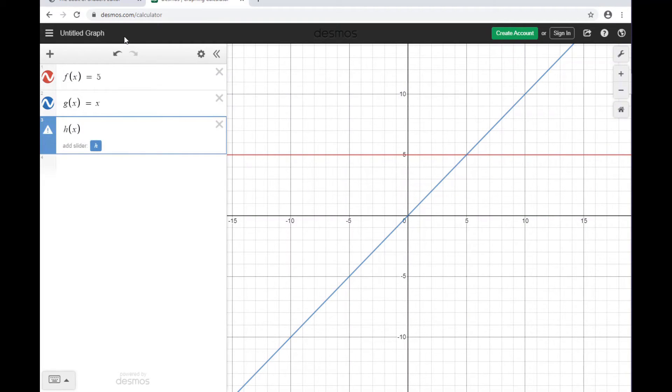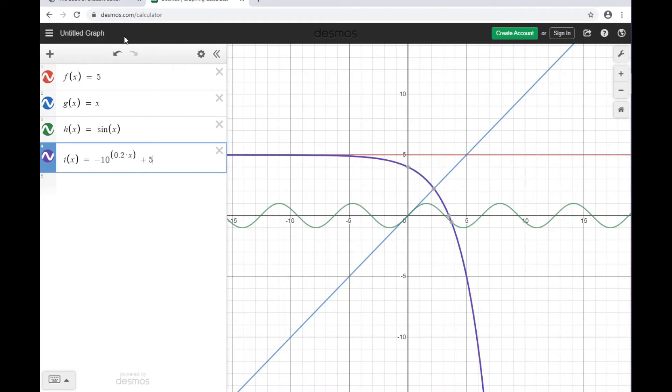The first function is a constant. The second is the linear, that's the diagonal one. The third one is the sinusoidal, I'm using sine, that's the wave. And the fourth one is just a modified exponential function. I made it track down. Usually it tracks upwards.